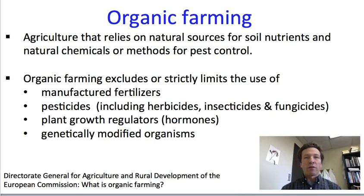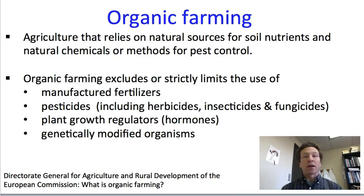Before we go further, we should talk a little bit about what organic farming means. Organic farming is agriculture that relies on natural sources for soil nutrients and either natural chemicals or natural methods for pest control.